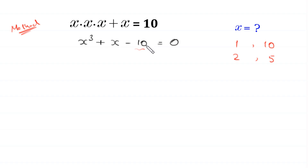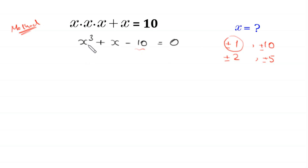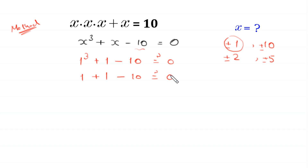These 4 numbers are factors of this 10. These can be either positive or negative, so plus or minus 1, 2, 5, and 10. We plug in these 4 numbers one by one in this equation to see if they are solutions. First, we try positive 1. This equation becomes 1 cubed plus 1 minus 10. Now, 1 plus 1 is 2, and 2 minus 10 is negative 8, which is not equal to 0. It means 1 is not a solution.